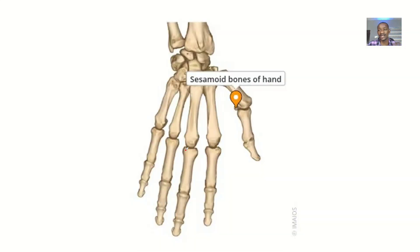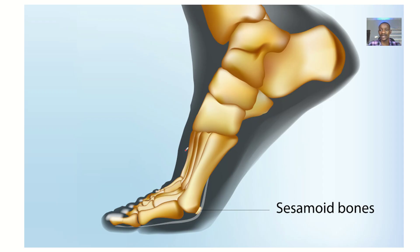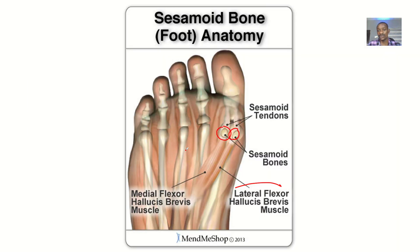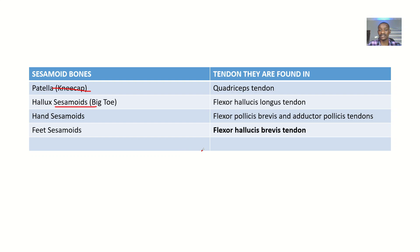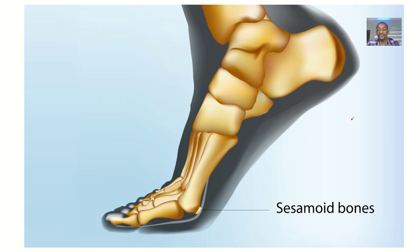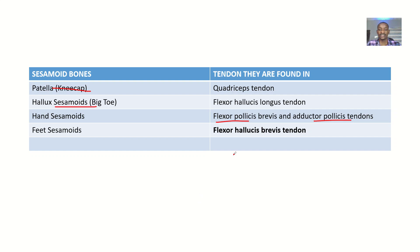Then we have sesamoid bones found in the hand. There are two tendons that contain sesamoid bones in the hand: the flexor pollicis brevis tendon and the adductor pollicis tendon. You can take your atlas and look at these muscles.